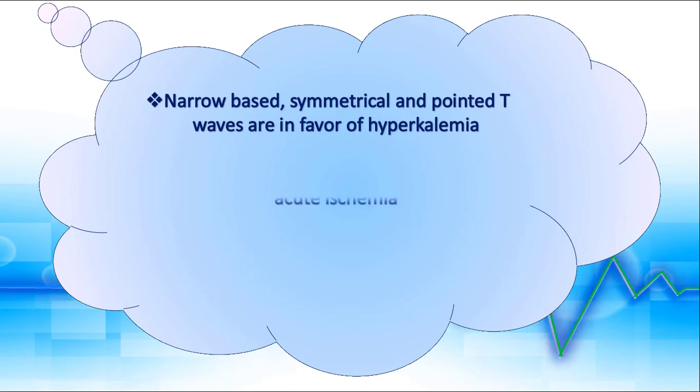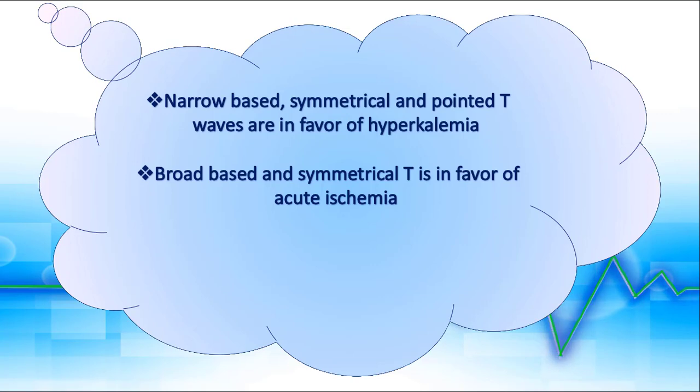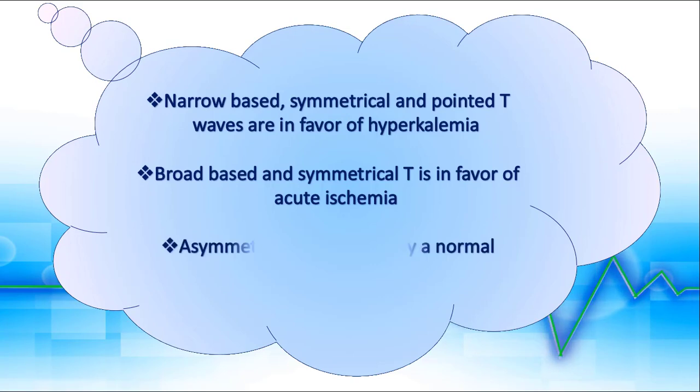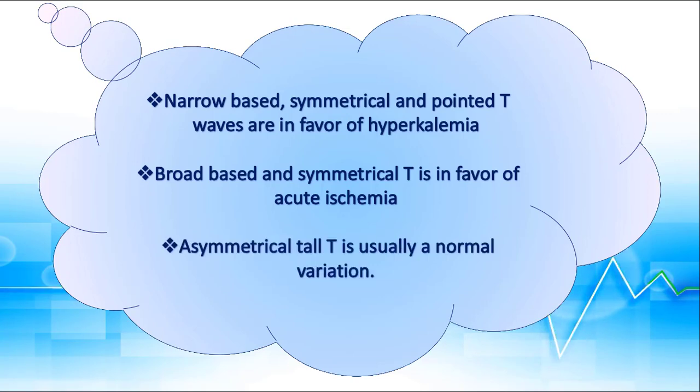In summary: narrow-based, symmetrical, and pointed T waves are in favor of hyperkalemia. Broad-based and symmetrical T waves with concomitant ST elevations or reciprocal ST depressions are in favor of acute ischemia. Asymmetrical tall T waves are in favor of normal variation.